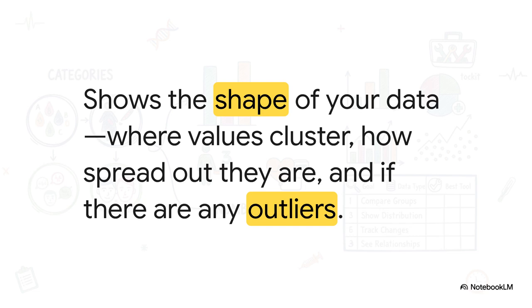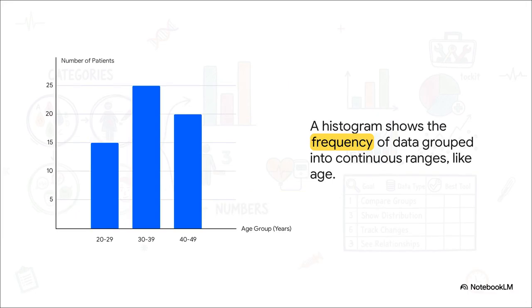A histogram's purpose is to show you the shape of your data, where the values tend to cluster, how spread out they are, and if there are any outliers, those values that are way higher or lower than everything else. So in this example, we're looking at the age distribution of patients. We've grouped the data into ranges, like everyone from 20 to 29 years old. And the height of the bar tells us how many people fall into that specific age group. You can instantly see which age brackets are most common in your clinic.